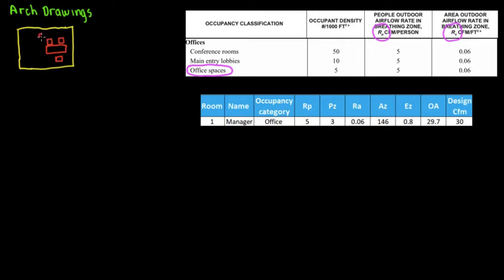Let's label the seats as S, S, and S — three seats. This is a desk. So what we're trying to do here is, for this office — now that we have the category — there are so many categories like conference room, lobbies, computer labs, bedrooms, corridors, and a lot of categories.